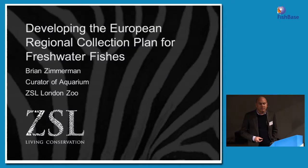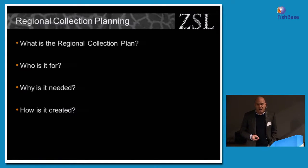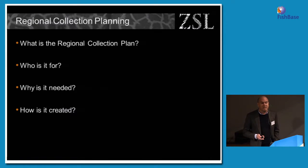This is based around an ongoing process within European zoos and aquariums called Regional Collection Planning. I'll be talking about what the Regional Collection Plan is, who it's for, and why it's needed — very briefly. And then I'm going to go into a bit more detail about how it's created, and specifically how we started creating it for freshwater fishes.